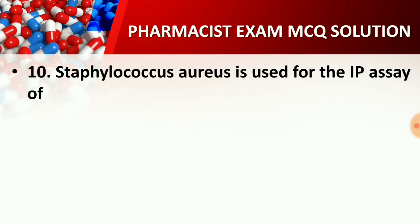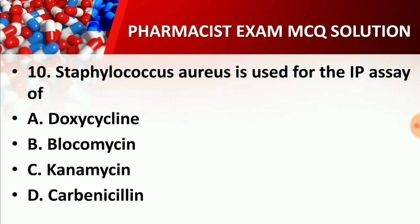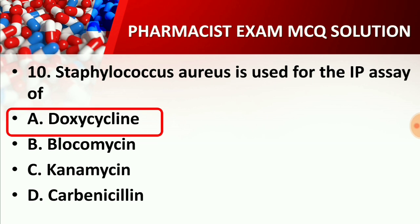Question number ten: Staphylococcus aureus is used for the IPQA of which drug? Option A: Doxycycline, Option B: Bleomycin, Option C: Kanamycin, Option D: Carbenicillin. The right answer is Option A: Doxycycline. Staphylococcus aureus is used for the IPQA (microbiological assay) of Doxycycline.